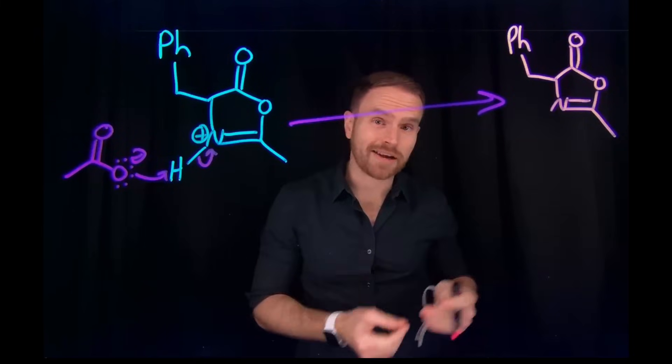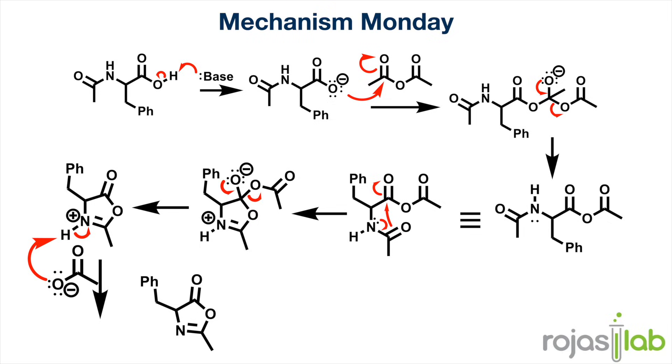So to recap, our N-acylphenylalanine can be deprotonated by a base, allowing this carboxylate to be used as a nucleophile, which will attack acetic anhydride. Once these pi electrons come back down, it kicks off acetate as a leaving group, allowing the nitrogen lone pair of electrons to shift over, allowing the pi electrons to act as a nucleophile for our next anhydride functional group.